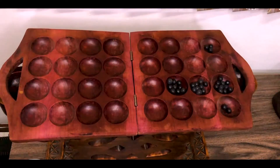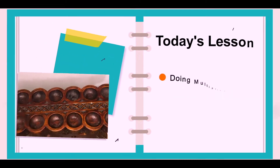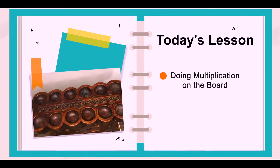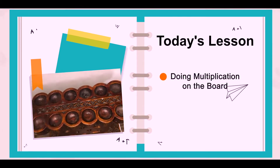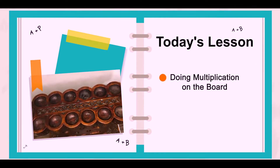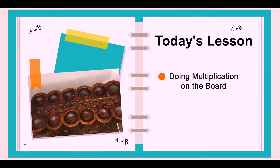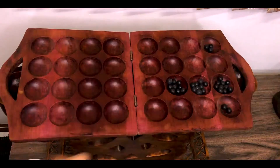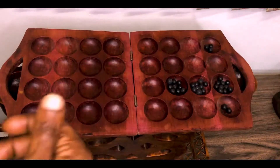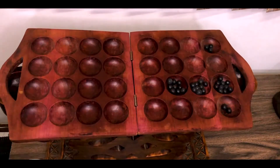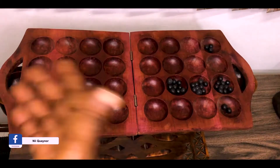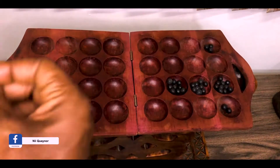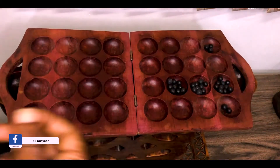Welcome to an Oware Calculus lesson. In this lesson I'm going to show you how to do multiplications on the Oware board. Notice that the variant is different. You are familiar with the two-row boards which are prevalent in Western Africa. This one — the four-row board — is prevalent in Eastern and Central Africa.